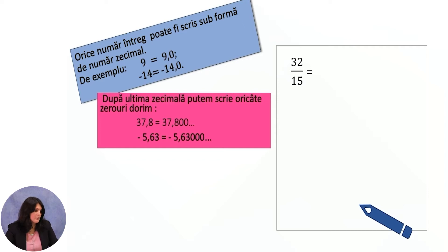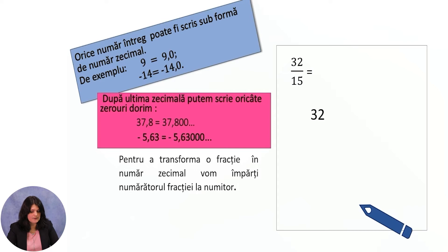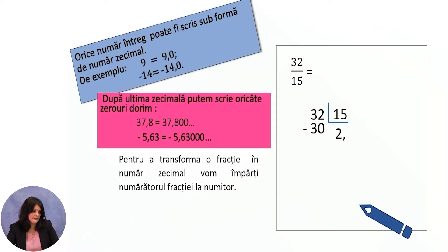To transform a fraction into a decimal number, we divide the numerator of the fraction by the denominator. For example, we divide 32 by 15. 15 goes into 32 two times. 2 multiplied by 15 is 30, which we subtract from 32. 32 minus 30 equals 2. Since we can add as many zeros as we wish after the last decimal place, we bring down a zero.